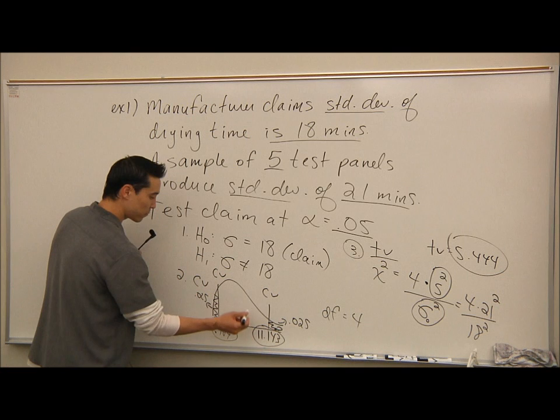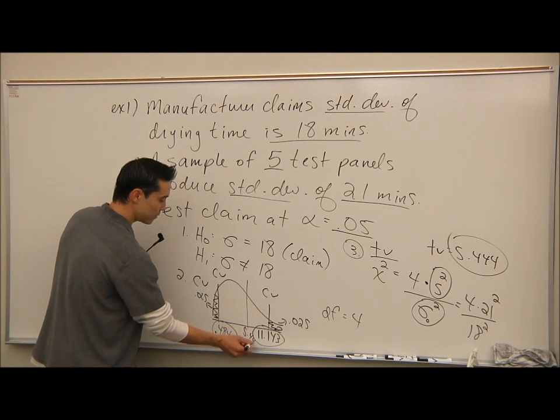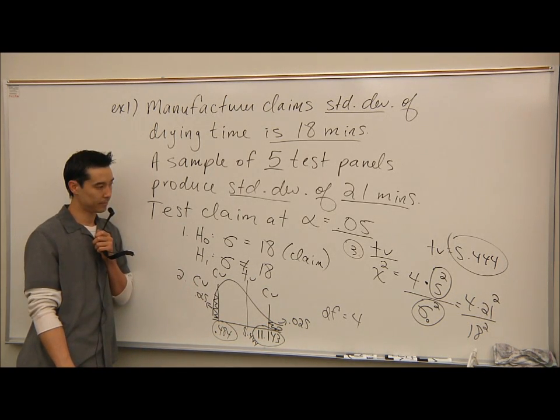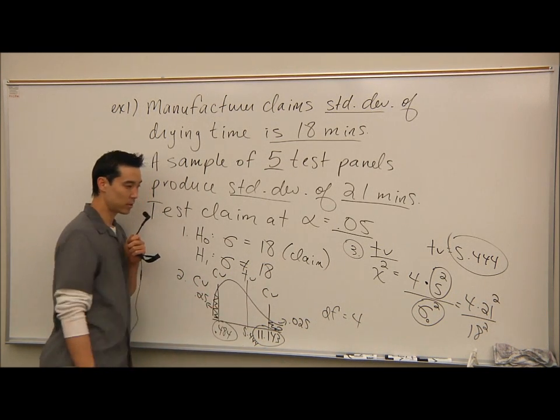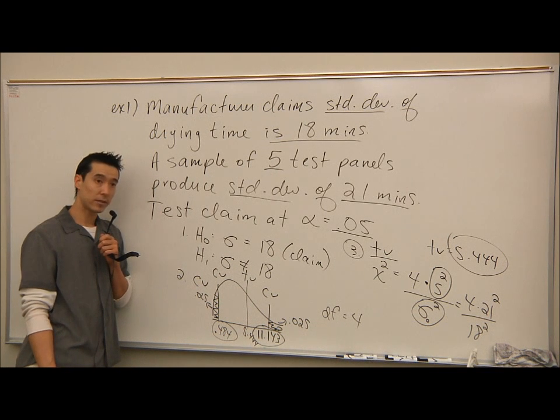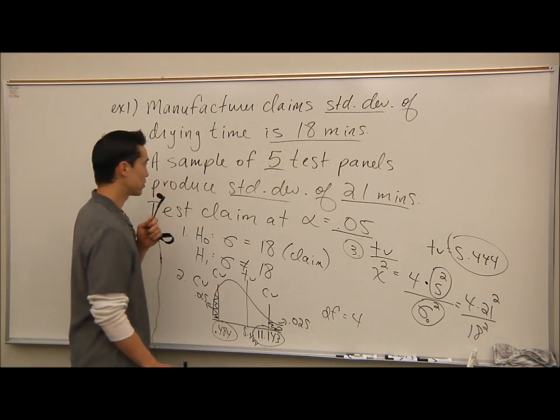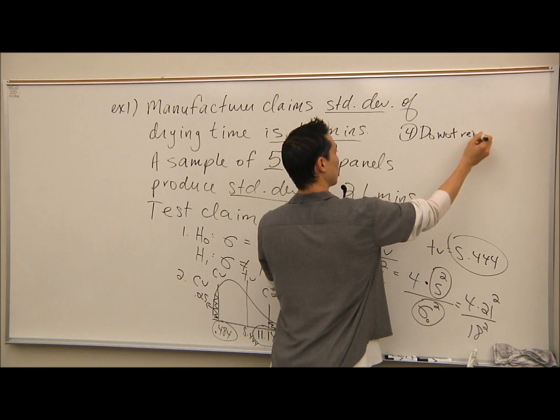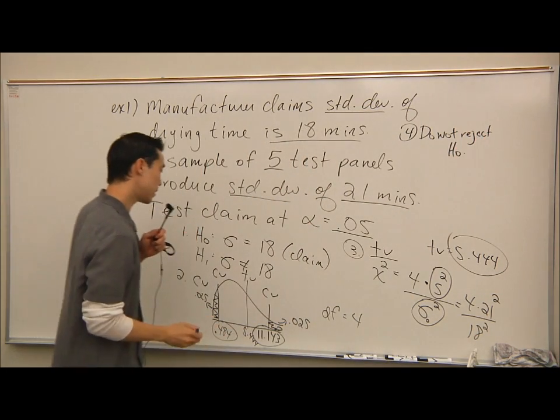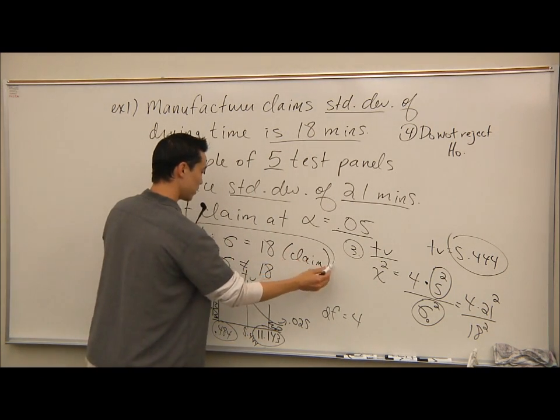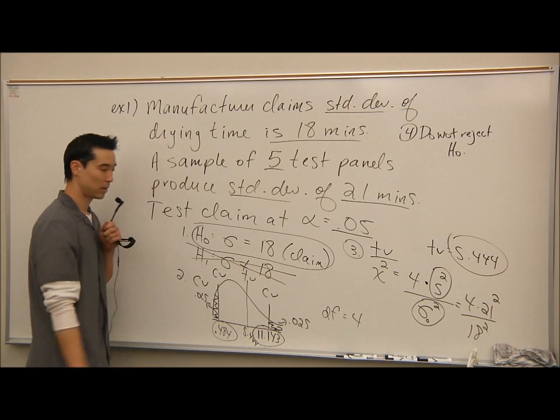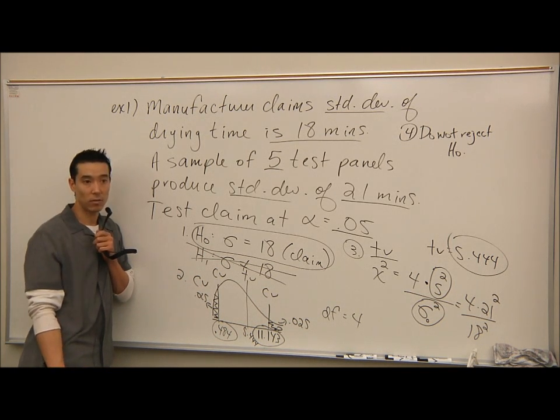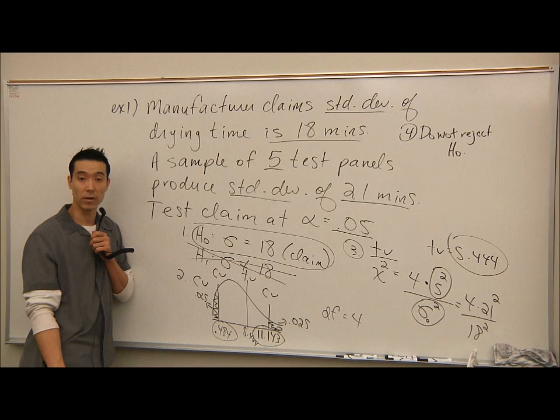So I go back to step 2. 5.4444 is maybe right here somewhere. It's in between these critical values, and it doesn't lie in one of the critical regions. So if I have a picture like this, where it's not in the critical region, what do I do? What's my outcome? Do not reject. Do not reject H0. So step 4. Do not reject. So I go back to H0 and H1. I'm not rejecting this, so I'm going to circle it. And I'm going to cross through this. And then in my own words, what happened? Well, they claim the standard deviation was 18. We support that. There's not enough evidence to say otherwise.